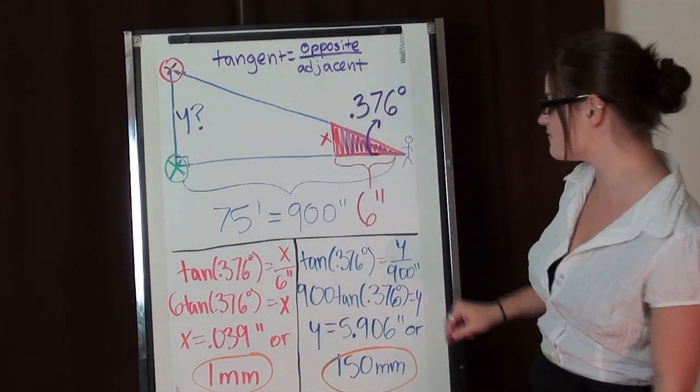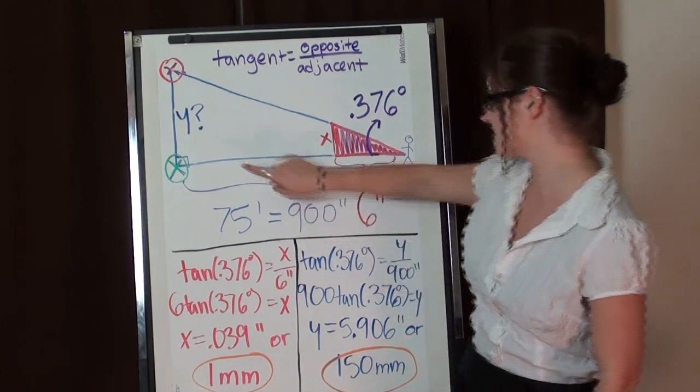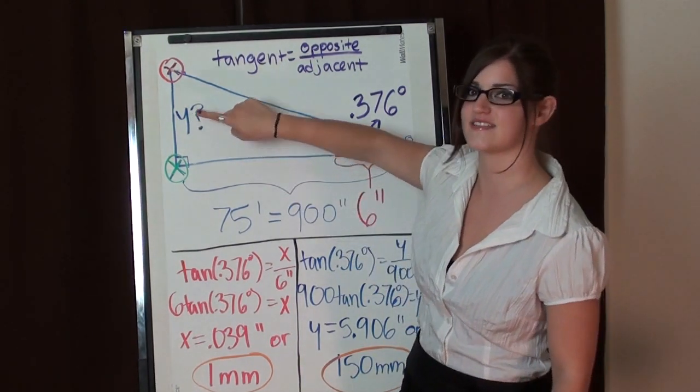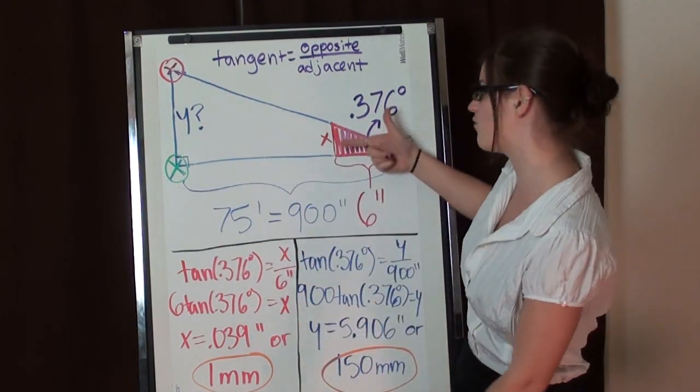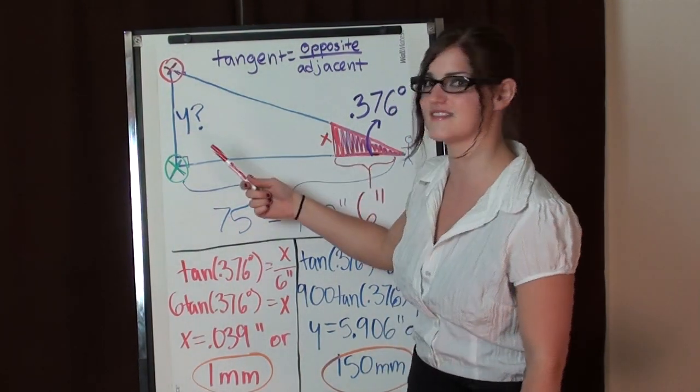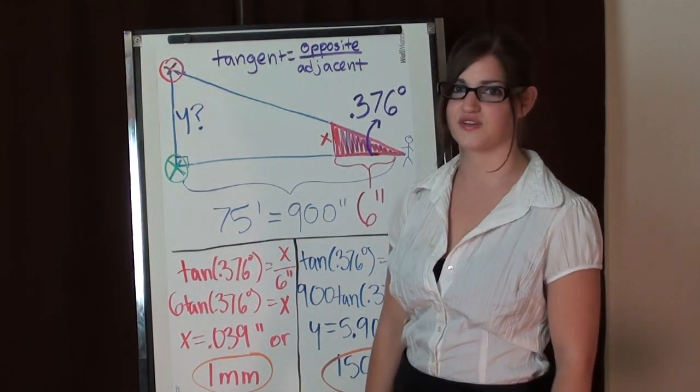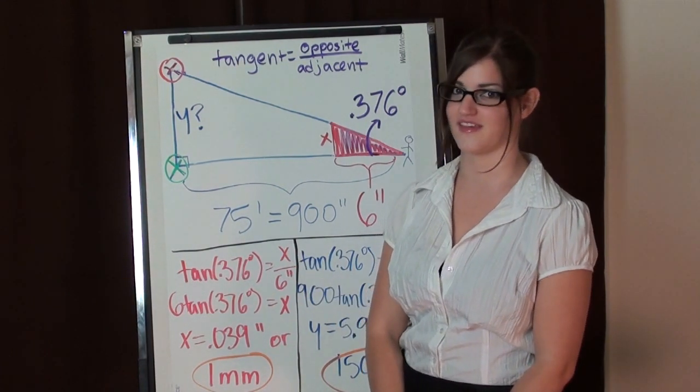But that one millimeter difference at the barrel with the very same angle becomes 5.906 inches down at the target, which is 150 millimeters compared to the one millimeter down at the barrel. So you can see why that distance really makes things a lot trickier. And with these clips next you'll see just how I fared with it.